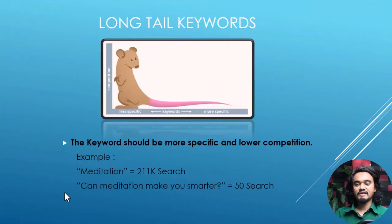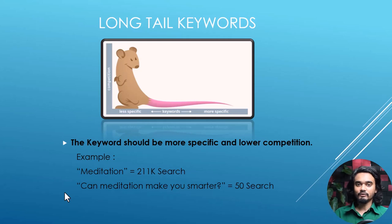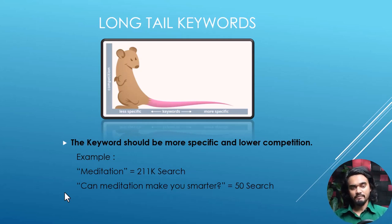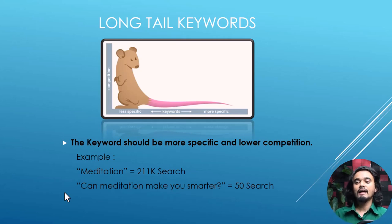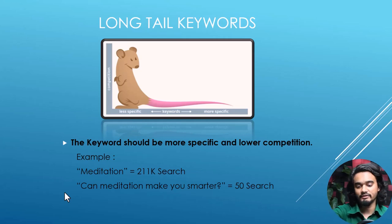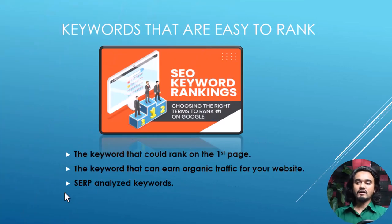Number four is long tail keywords. The keyword should be more specific and have lower competition. For example, the word 'meditation' is searched by 2,100 people, but the phrase 'can meditation make you smarter?' is searched by only 50 people. As you can see, the keyword is longer and has less competition — it is a low competitive, long tail keyword.